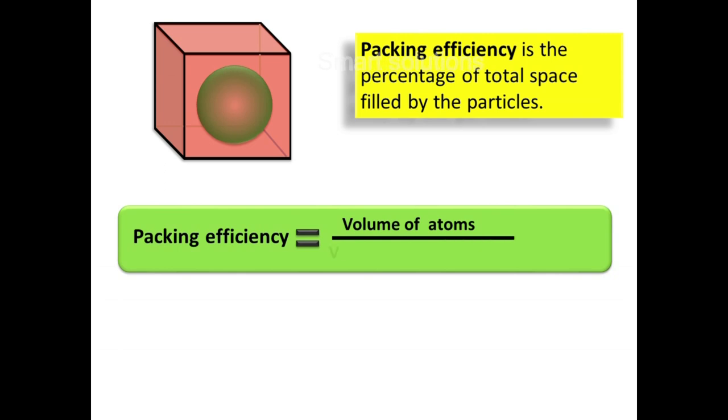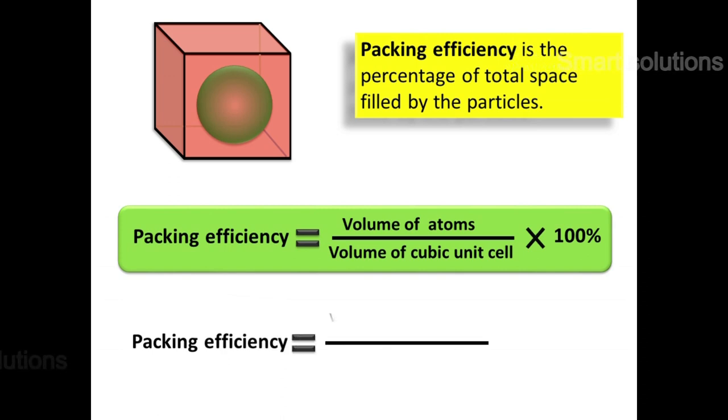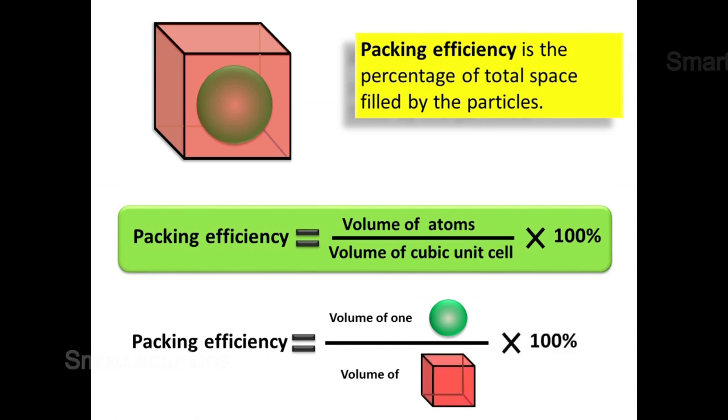divided by volume of cubic unit cell multiplied by 100%. In simple cubic lattice, we have only one atom. So the packing efficiency is equal to volume of one atom divided by volume of cubic unit cell times 100%.